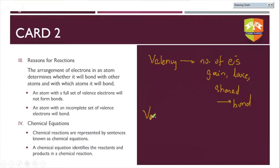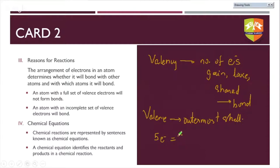For example, if the number of electrons in the outermost shell is five, then the valence electrons is five. But the valency will be minus three, because the atom needs three more electrons to form a chemical bond. Remember the difference between valency and valence electrons — it's a common mistake that people use interchangeably, which causes problems in writing answers.